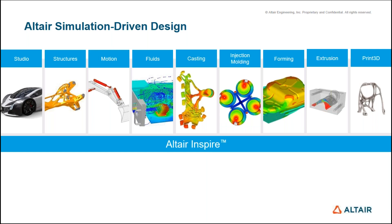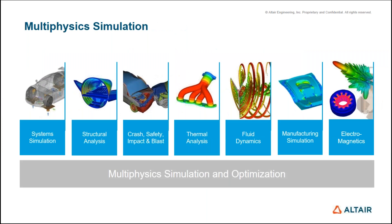For multi-physics simulation, when you need complex physics, you start with our full-fledged MBD solver for rigid and flex body simulation. From a structural analysis perspective, we have two solvers: OptiStruct and Radioss. OptiStruct is used for linear static, dynamic, modal, frequency response, fatigue analysis, and implicit simulation. Radioss is specifically used for crash, safety, impact, and blast simulation. On the right-hand side there is thermal CFD capability and manufacturing simulation, plus electromagnetic capabilities — a complete product portfolio where you can couple these solvers at any point in time.